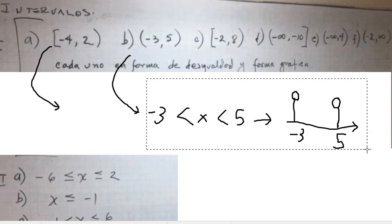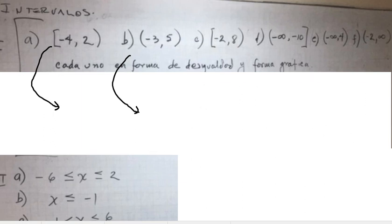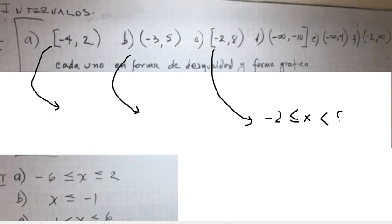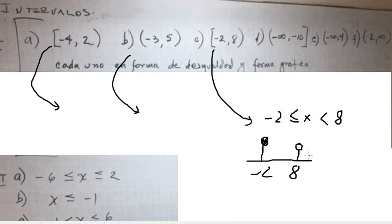For the next one, we have the square bracket, so s is greater than or equal to negative two and smaller than eight. The graph should look like this.